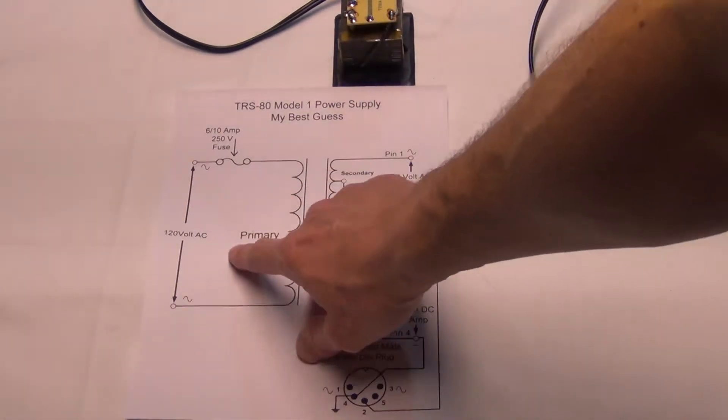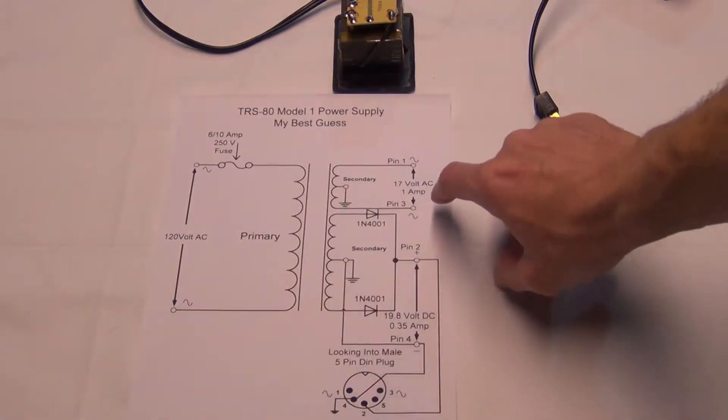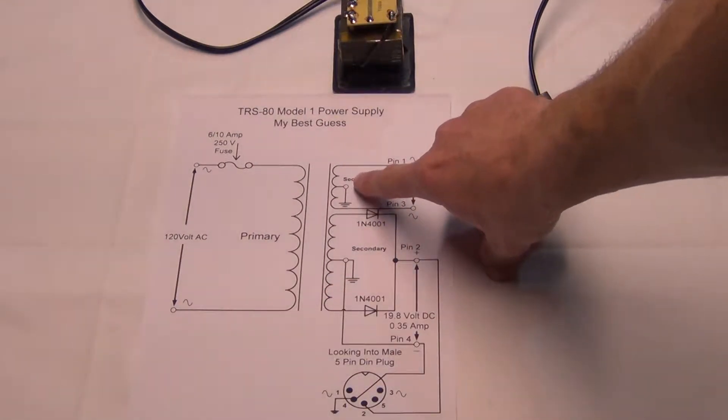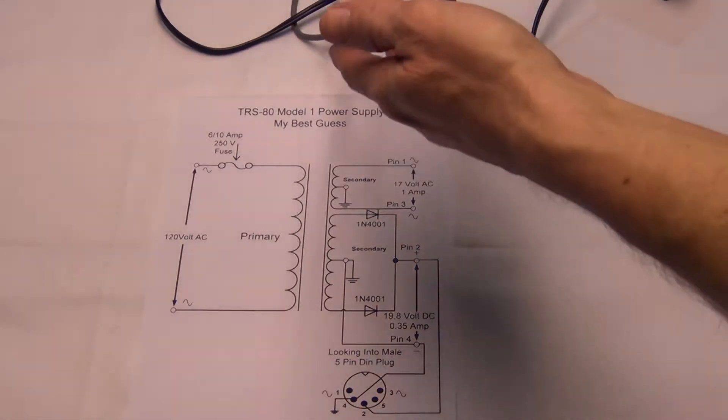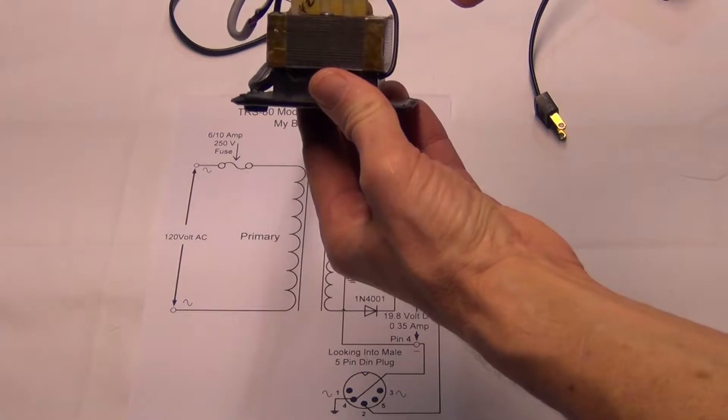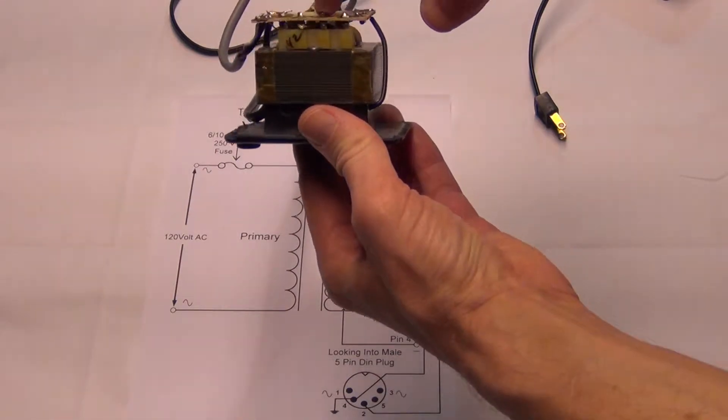Okay. We talk about the primary here, 120, but I think on the secondary, what it is is the center point here, which is this guy here. I think it's the center tap, is where they're connecting the two wires.